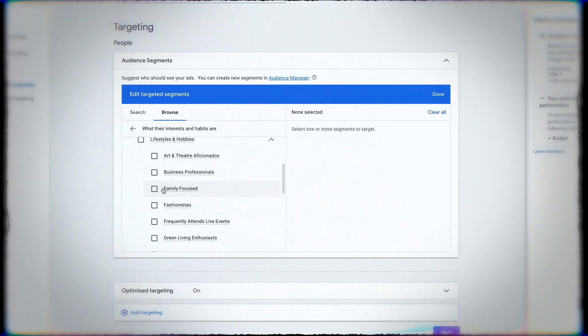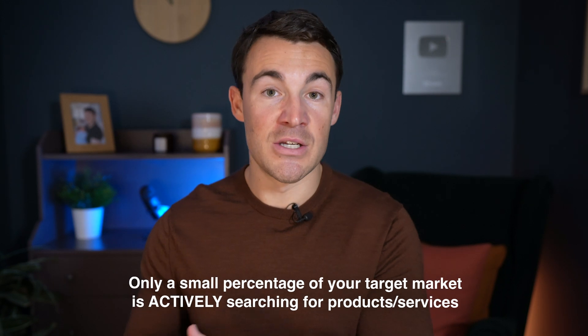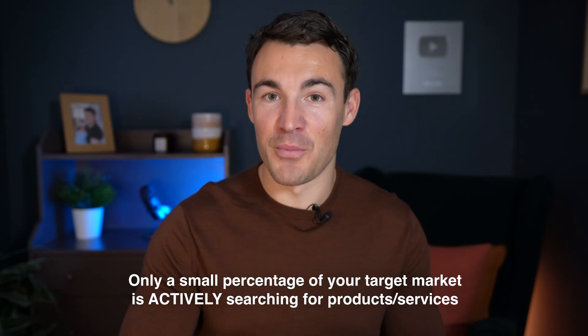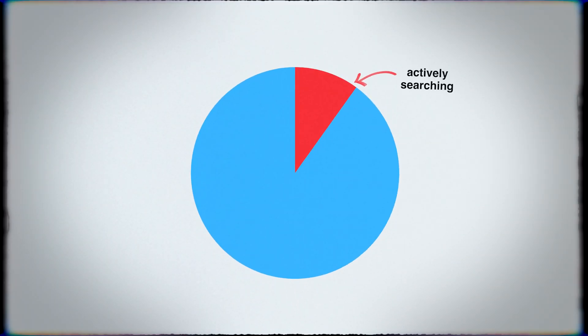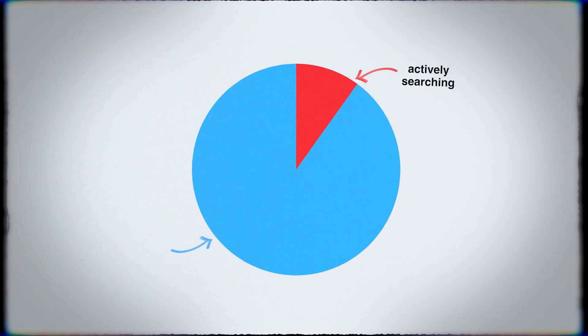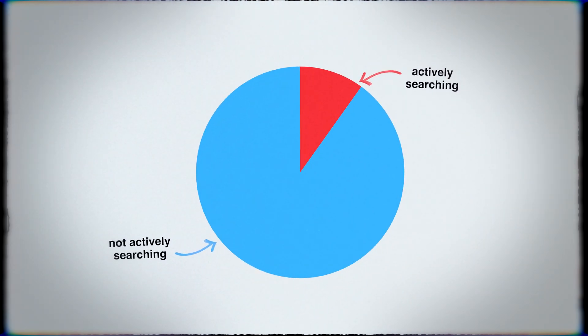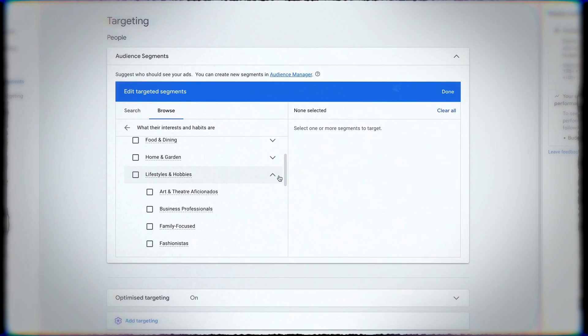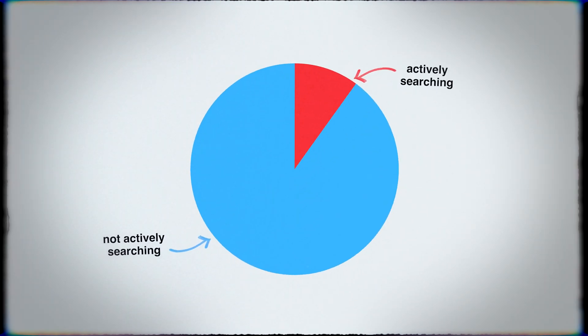When you target cold audiences through the display network, as well as warm audiences, you also get to tap into a much larger potential target market. It's known marketing wisdom that only a small percentage of your target market is actively searching for the products and services you offer. The most common figure used is 10%, so of your total market only 10% are actively searching — the other 90% are potential customers but aren't actively searching.